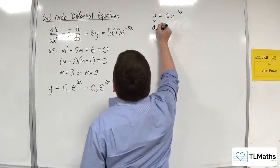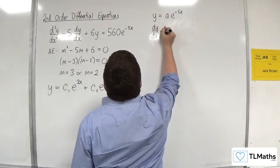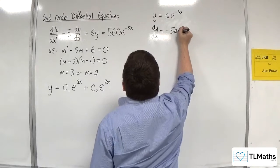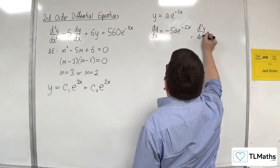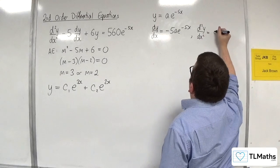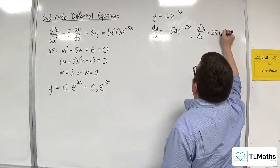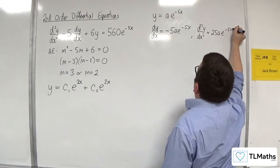So I need dy by dx, which would be minus 5a e to the minus 5x. And d2y by dx squared would be equal to 25a e to the minus 5x.